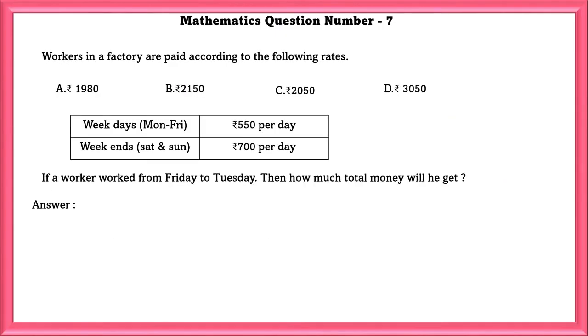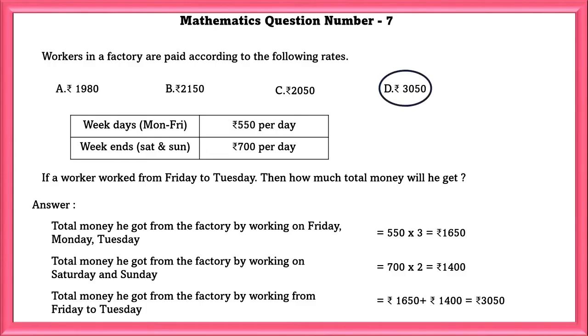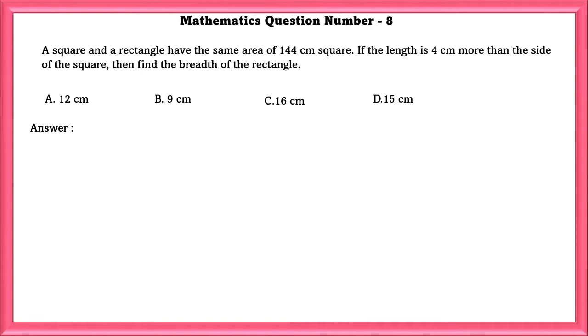Mathematics Question Number 7: Workers in a factory are paid according to the following rates. If a worker worked from Friday to Tuesday, then how much total money will he get? Total money he got from the factory by working on Friday, Monday and Tuesday is equal to 550 rupees times 3, which is equal to 1,650. Total money he got from Saturday and Sunday is 700 times 2, which is equal to 1,400. Adding these two, we will get 3,050. So, he earned 3,050 rupees.